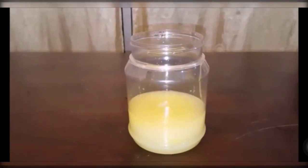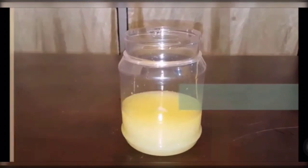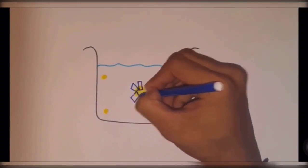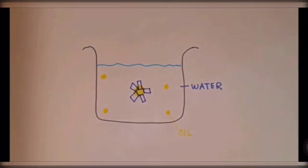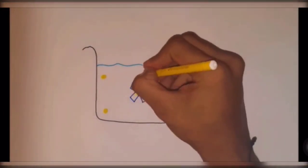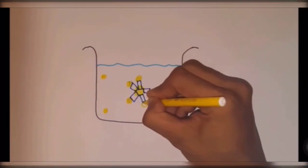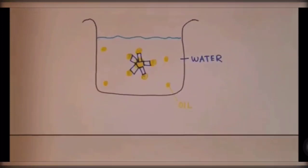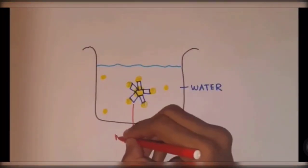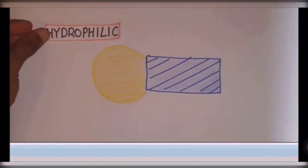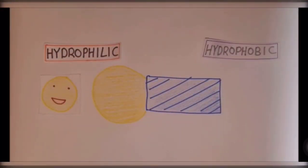It can be seen that oil finally mixes with water plus the egg yolk. How did this happen? When a surfactant is added into water, the non-polar tail — the water-repelling part — will come together in a circle around the oil droplet. This is called a micelle. It has a hydrophilic head and a hydrophobic tail that repels water.